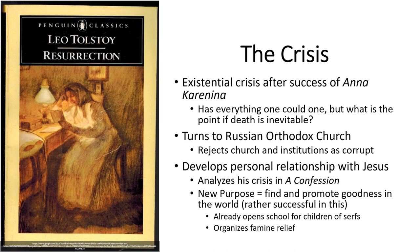Just as we discussed in the Middle Ages with Dante, Tolstoy finds that the church as a large institution is unfortunately often open to corruption — and he sees this clearly not just in the Orthodox Church but also in the government in general. Because of the severe disappointment he has in the church as an institution, he eventually begins to develop a personal relationship with Jesus. The pinnacle of this is when he writes A Confession, in which Tolstoy analyzes this existential crisis he goes through and reveals that he ultimately finds a new purpose: to find and promote goodness in the world — to leave the world a better place than he found it.